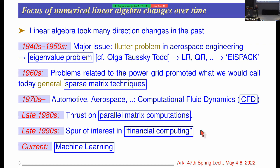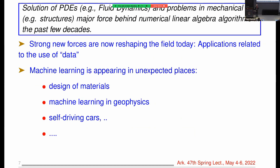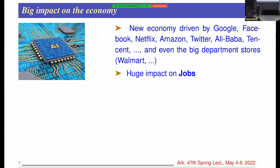In sparse matrix computations specifically, the field has been dominated by solving problems that come from PDEs — large linear systems, finite elements, and so on. But machine learning is now appearing even in places like designing materials and solving PDEs, with a big impact on the economy.